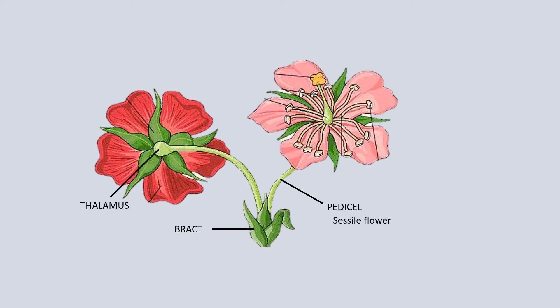Thalamus: The tip of the Petzal gets enlarged or swollen to form a platform-like structure called Thalamus. Floral whorls arise from the nodes of Thalamus.